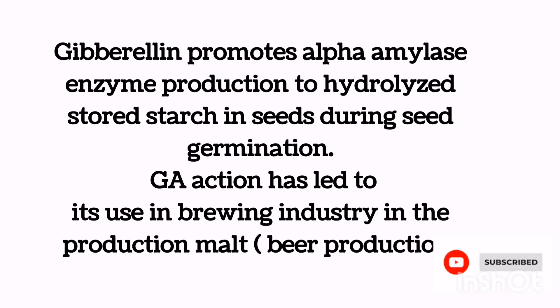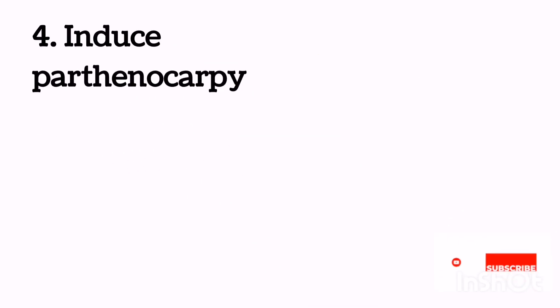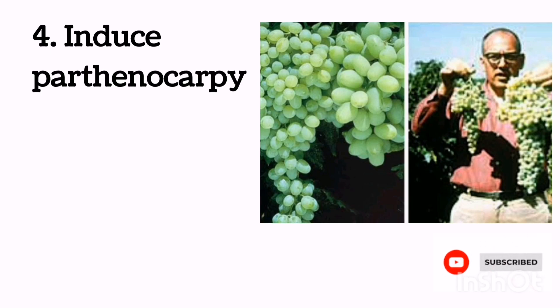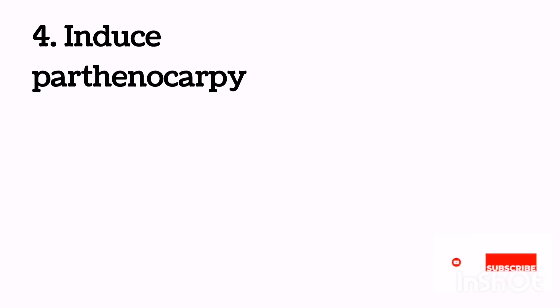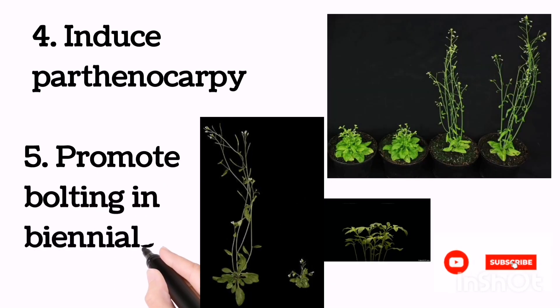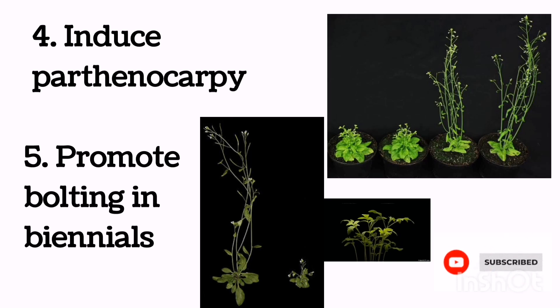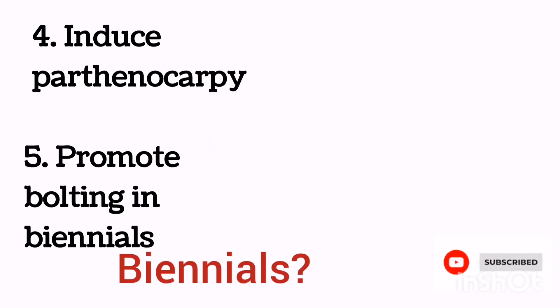Gibberellins promote the production of seedless fruit by inducing parthenocarpy, which is described in another video. Gibberellins also promote an increase in fruit size. Additionally, gibberellins promote bolting in biennials — bolting is when a plant or agricultural crop produces a flowering stem in a natural attempt to produce seeds for reproduction. What are biennials? This is a short assignment for you.